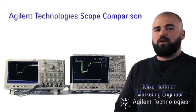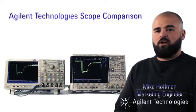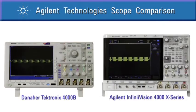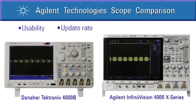Hi, my name is Mike Hoffman, Product Marketing Engineer with Agilent Technologies. In this video, we will compare the Agilent 4000X Series and the Tektronix 4000B oscilloscopes. We'll look at usability, update rate, memory, and triggering. Let's begin.